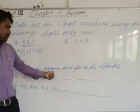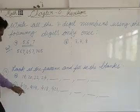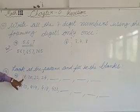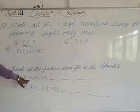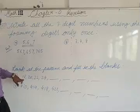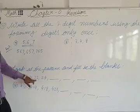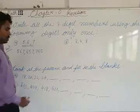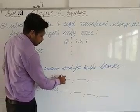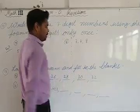Next: look at the pattern and fill in the blanks. Here, 18, 20, 22, 24 — 18 plus 2 equals 20, 20 plus 2 equals 22, 22 plus 2 equals 24. So every time we add 2. Therefore: 26, 28, 30, 32, and so on.